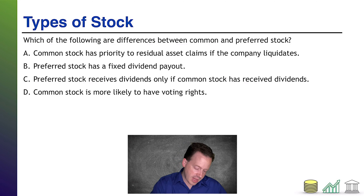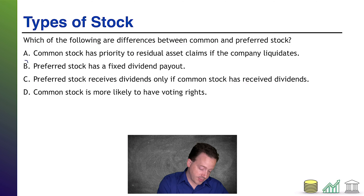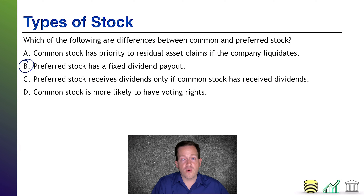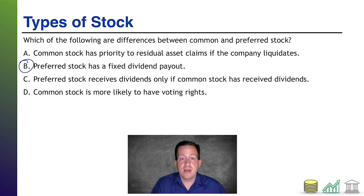Option B: preferred stock has a fixed dividend payout. That is absolutely true. Preferred stock behaves like debt in that way — debt has a fixed interest payout. Preferred stock, it's not interest because it's ownership, but it has a fixed dividend payout.